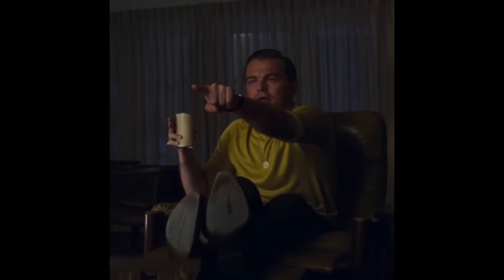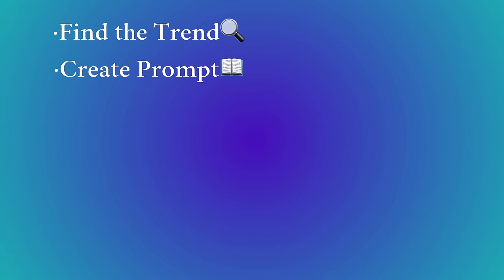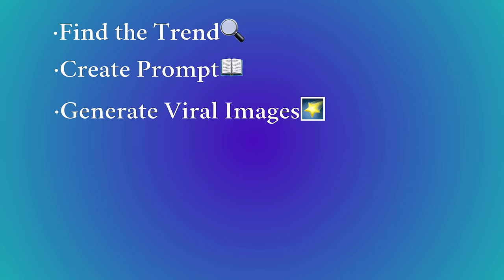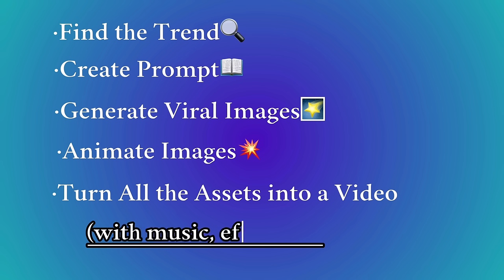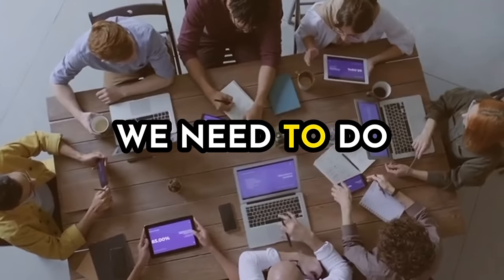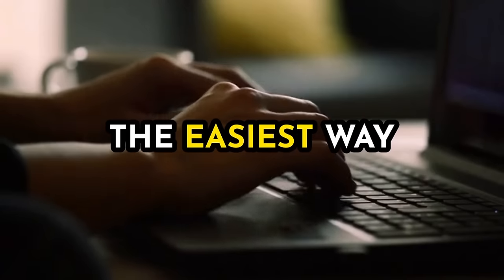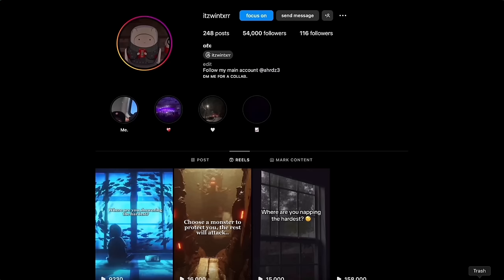Let's get straight to the real point: AI images and how to animate them. We don't need a script or AI voice, but we need to find the trend, create a prompt, generate high-quality viral images, animate images, and turn all the assets into a video with music, effects, etc. After a lot of tests, I found three AI tools — all we need to do is copy and copy. So let me show you the easiest way to start your own faceless YouTube channel, TikTok account, or Instagram page.